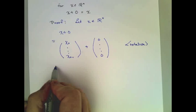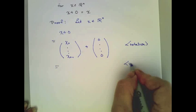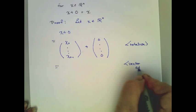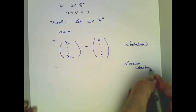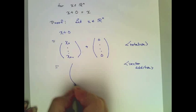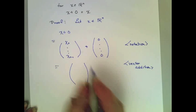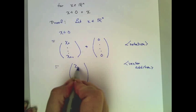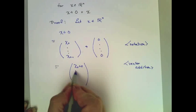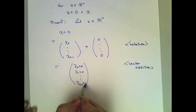Now, by vector addition, this is just a vector of size n with components chi 0 plus 0, chi 1 plus 0, and so forth, out to chi n minus 1 plus 0.